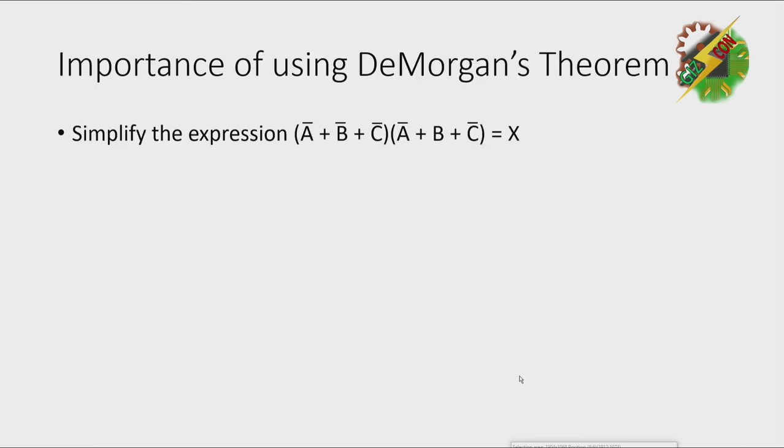Importance of using DeMorgan's theorem. Simplify the expression (Ā + B̄ + C̄)(Ā + B + C̄) = X. This is an example that I used in my previous video, the Boolean Algebra, the final example at that video.